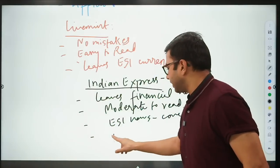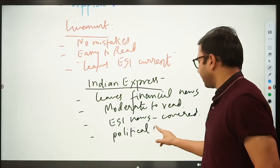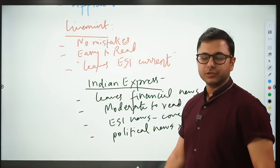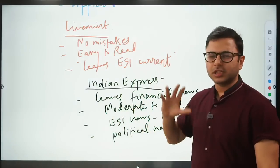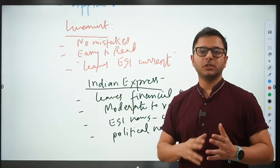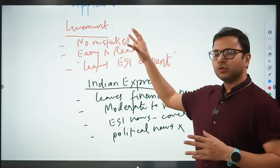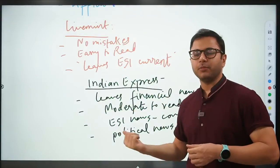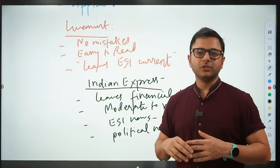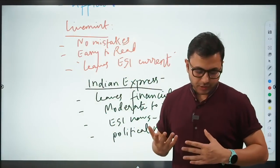Another disadvantage is it covers political news as well, so you have to filter out that political news. That's the advantage with LiveMint and Business Standard where political news is very minimal. Opinion are also not around political happenings. Here you'll find political opinions, so you have to leave a lot of those things, cross-mark those things. Otherwise you end up wasting a lot of time.